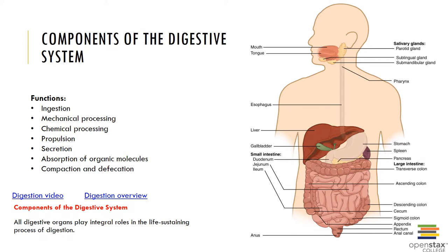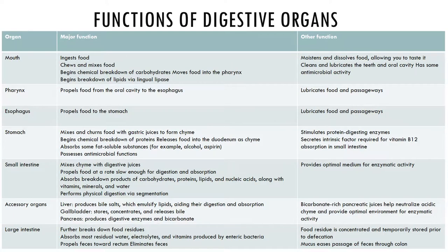The functions of the digestive tract. Here you can see the major functions of the digestive organs that we will discuss: the mouth, the pharynx, esophagus, stomach, small intestine, accessory organs, and the large intestine.